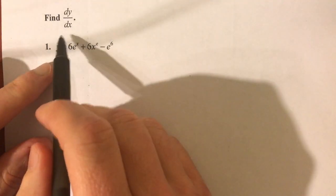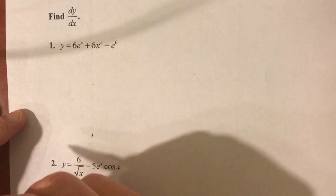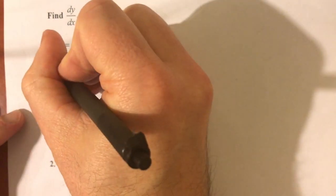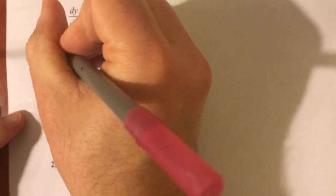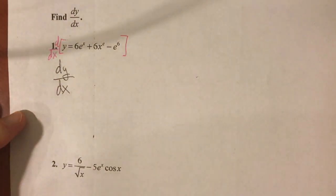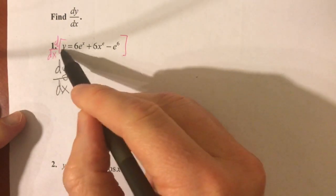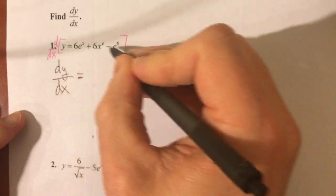So number one, find dy dx for this function. So y equals 6e to the x plus 6x to the e minus e to the sixth. So our derivative, y prime or dy dx. Remember, what we're really doing here, if you're still trying to get the hang of that Leibniz notation, is we're really taking the derivative of this entire equation with respect to x. And so the derivative of y, since it's not the variable x, is dy dx. But everything on this side is in terms of x, so you just go about your rules normally.